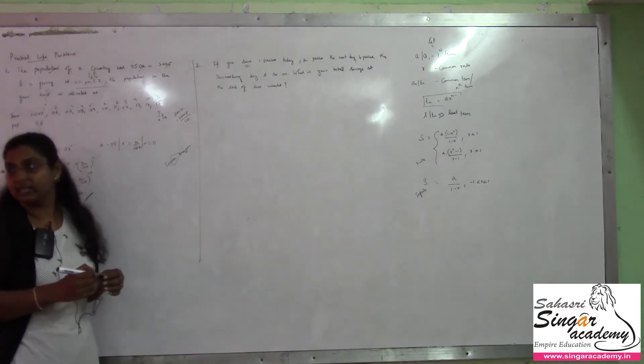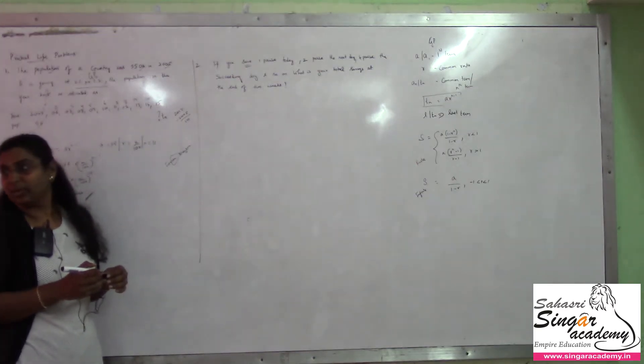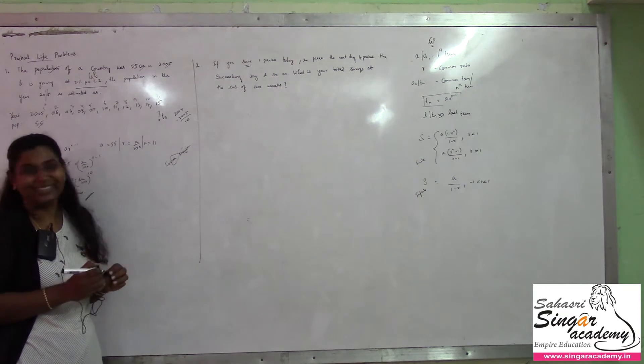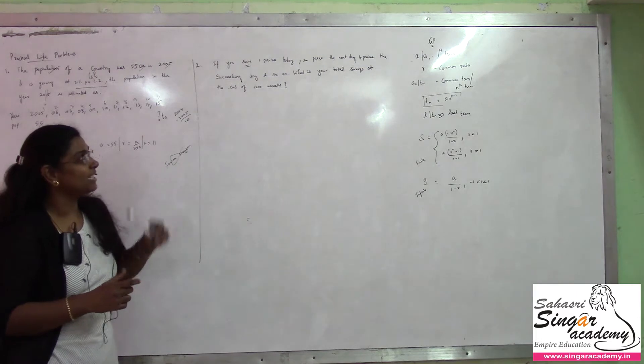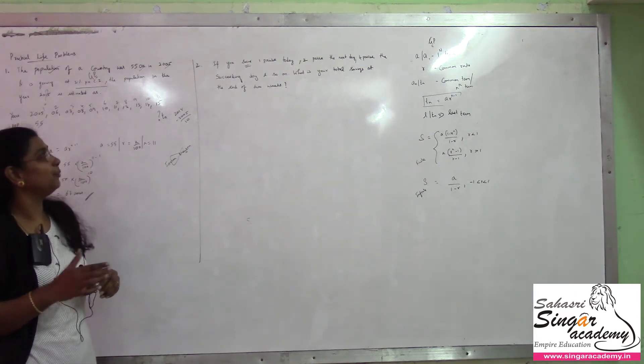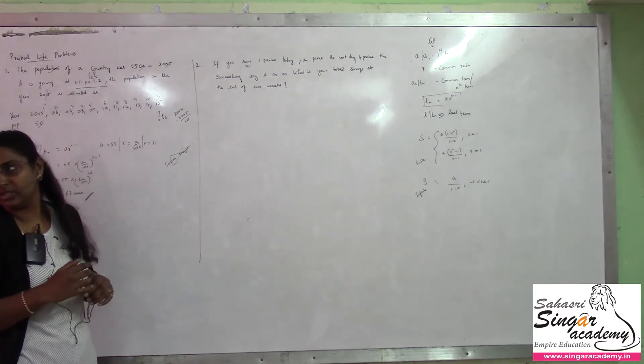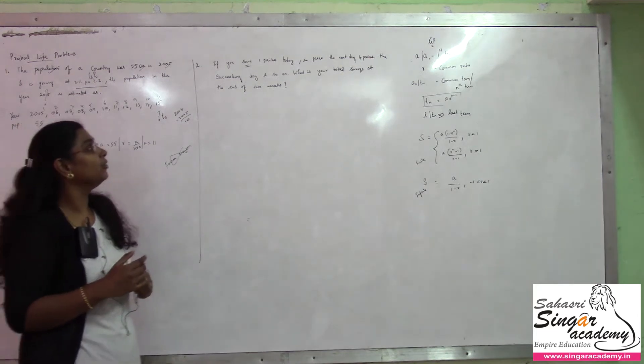If you are saving 1 paise today, what is the problem? Just read the problem. You don't want to miss one word. So, 1 paise today, 2 paise the next day and it goes on like 4 paise the succeeding day and so on. So, what is your total saving at the end of 2 weeks?